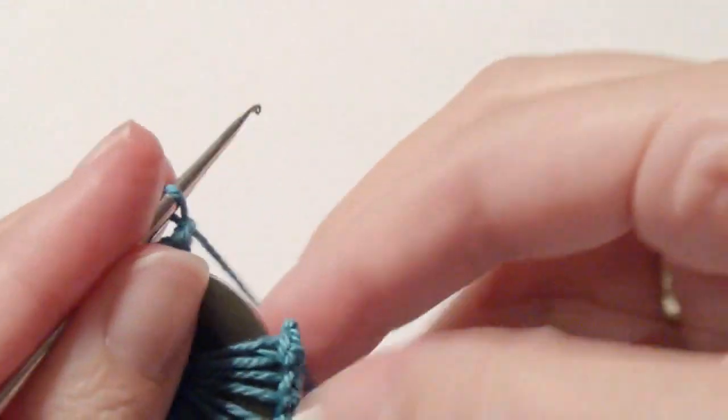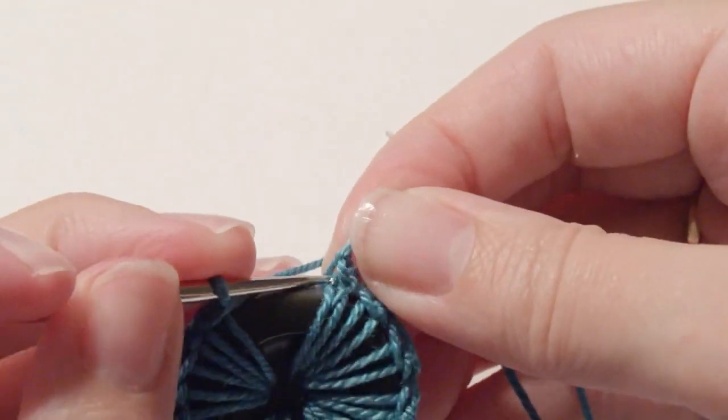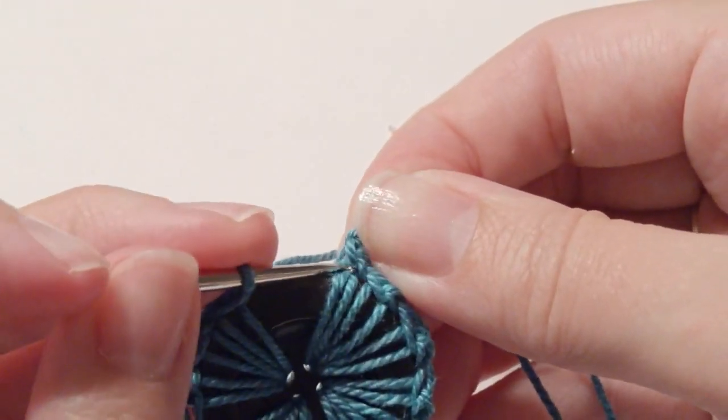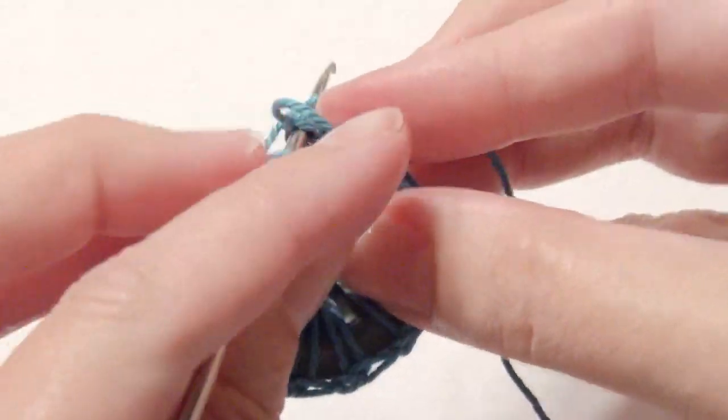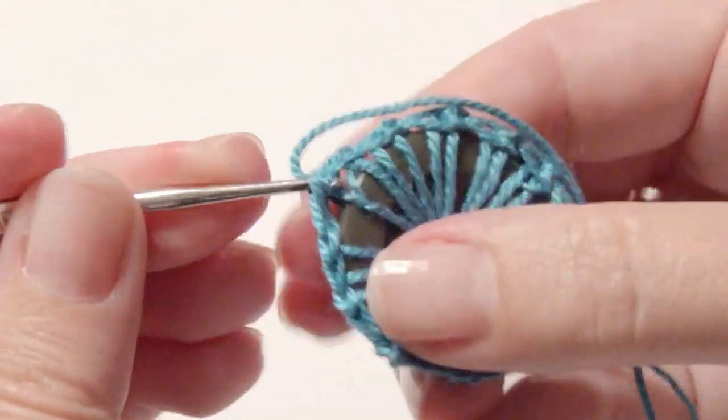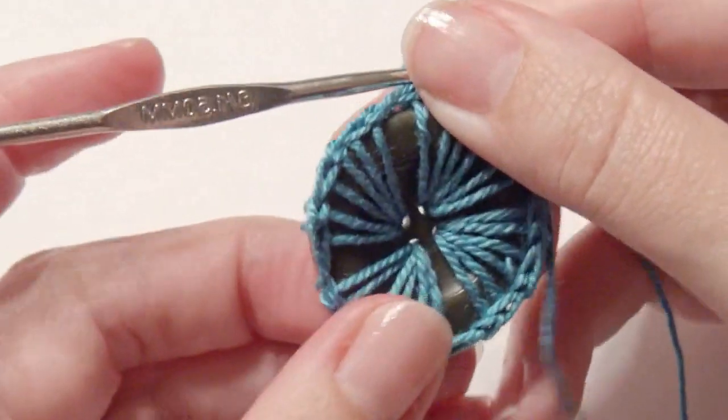Okay, at the very end I'm just going to slip stitch in the beginning stitch. And like I said, you can do up to three, four, five different stitches in each hole, just depending on how much you want to cover of the button.